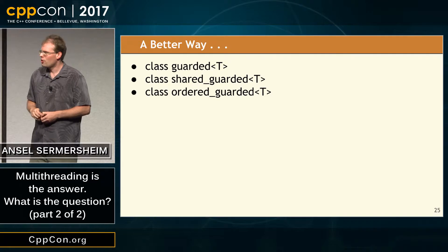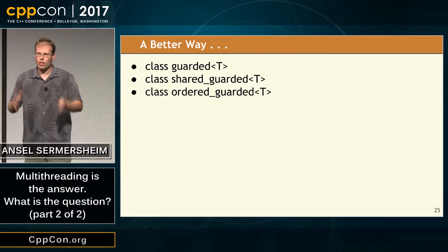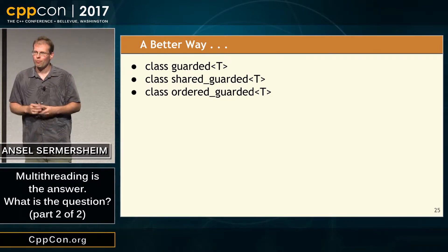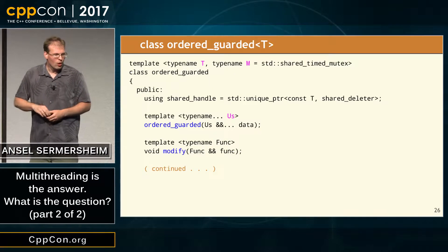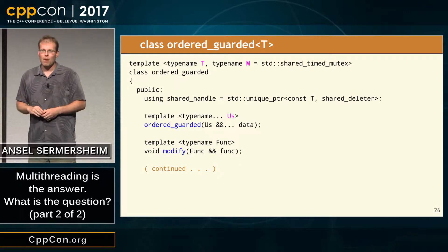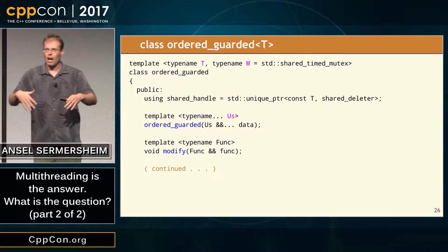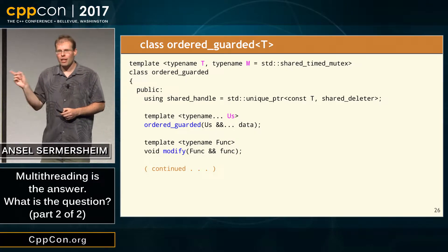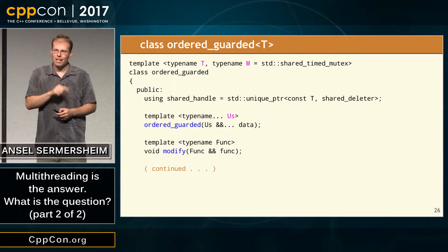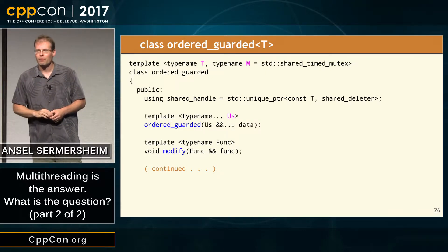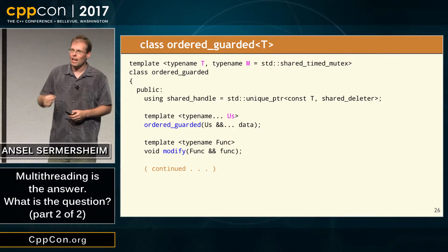We can generalize further. If we're thinking in a functional way — instead of imperative code where we get access to data and do stuff with it — we just want to say: this is the operation we'd like to do to mutate this data. This is a class called OrderedGuarded. Instead of having a lock method, it has a modify method where you pass in a functor. That functor receives the shared data already locked, does the work, and returns. If I know the functor terminates, I know that lock will be released once the operation is done.